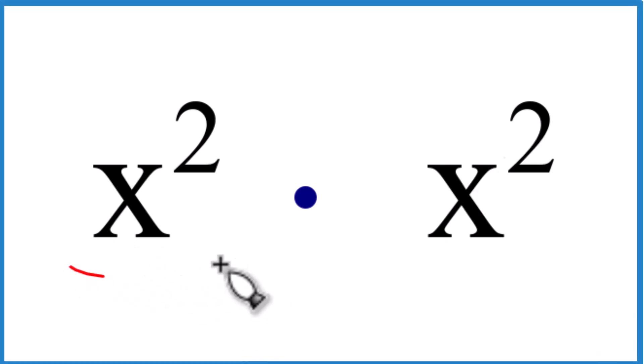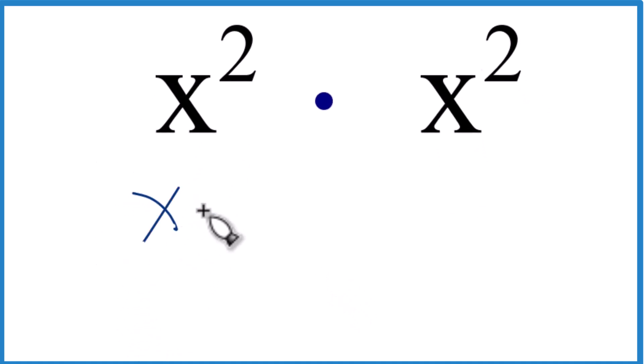If you need to multiply x to the second times x to the second, that's x squared times x squared, here's how we can do it. So first off, x squared, that's just x times x,